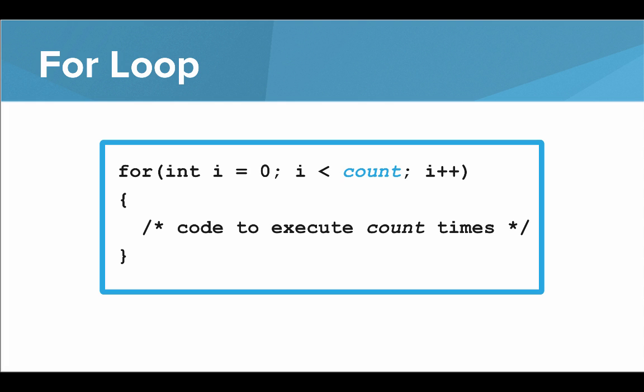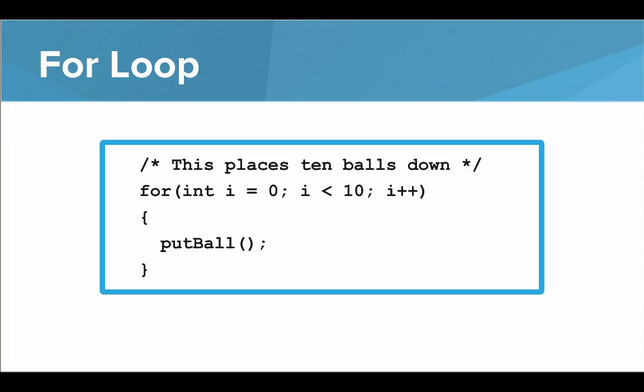So what does a for loop look like? We write: for (int i = 0; i < count; i++) followed by an open and close curly brace, and the code we want to repeat goes in between. This lets us repeat some code count times. For example, if we wanted to put down 10 tennis balls, that key number is the 10, and this says repeat put ball 10 times.